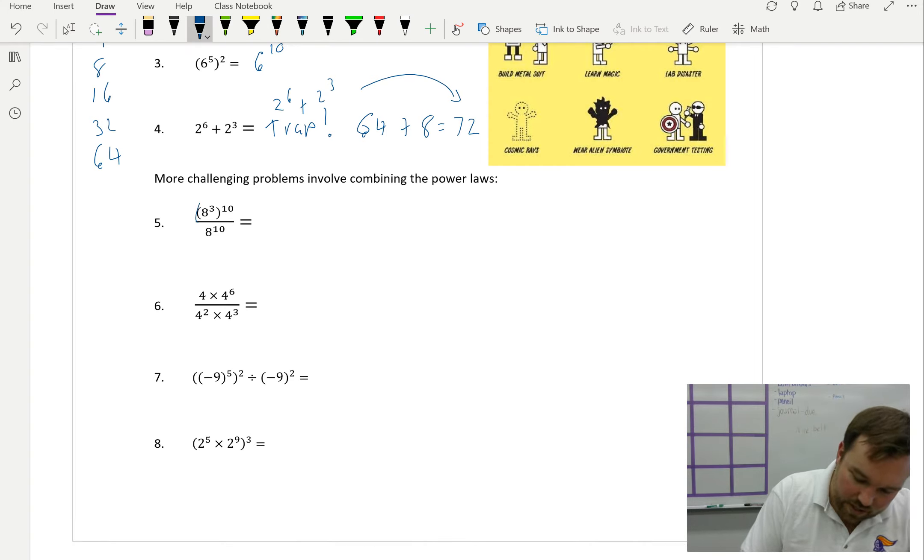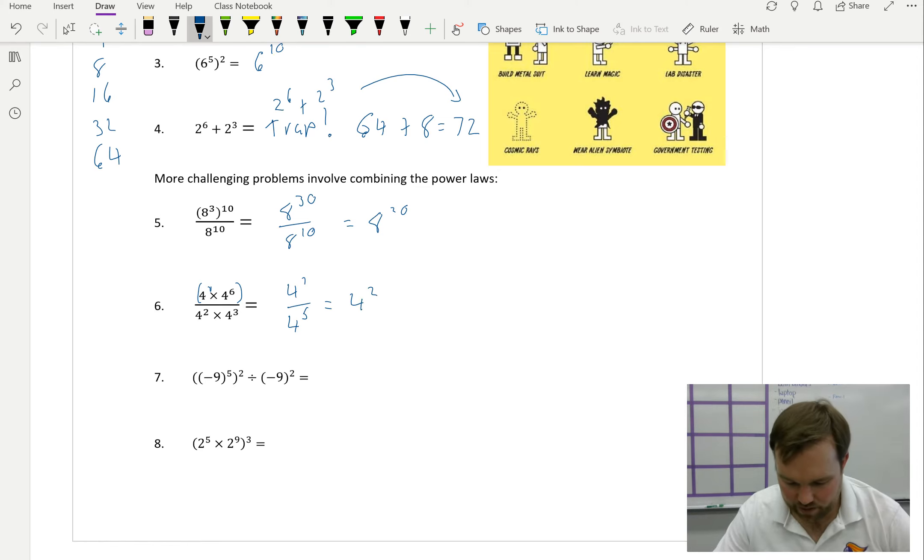Now, when fractions are written like this, typically it's implying there are brackets at the top and the bottom. So really, this is 8 to the 30 over 8 to the 10. Division, so we subtract, is 8 to the 20. Then, here, remembering a 4 written on its own is just to the 1. And the division implies brackets. So that's 4 to the 1 times 4 to the 6 is 4 to the 7 on top, 4 to the 5 on the bottom equals 4 squared. And that's as far as we want to go.